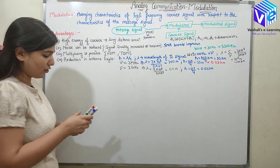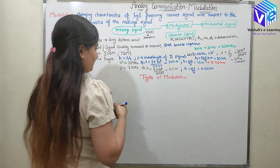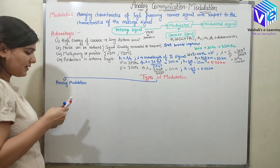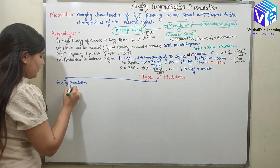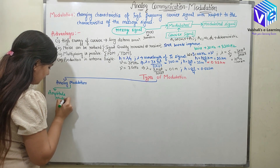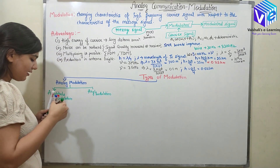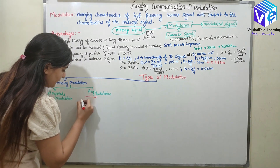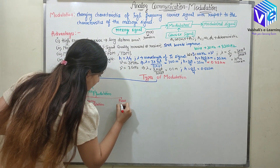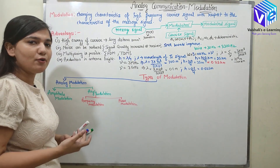Now coming to the various types of modulation. The first type is analog modulation. In analog modulation, we have two types: amplitude modulation and angle modulation. Angle modulation is also of two types: first is frequency modulation and the second is phase modulation. We will be talking about all these things in detail.